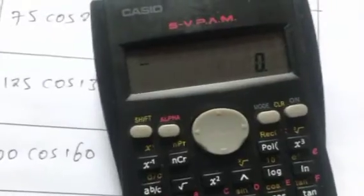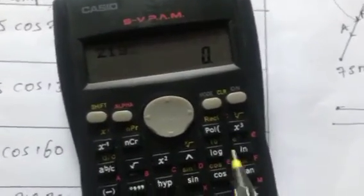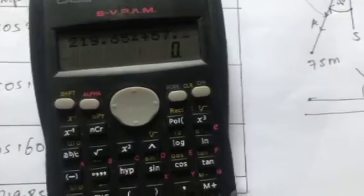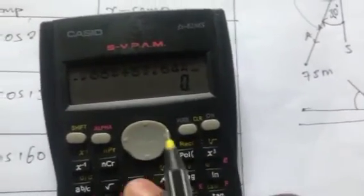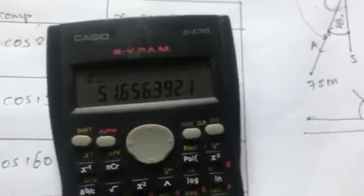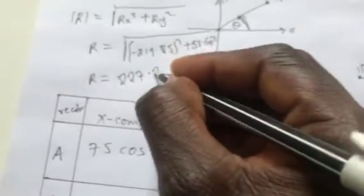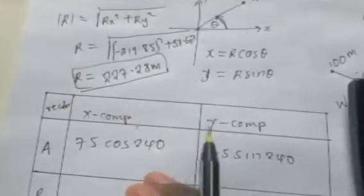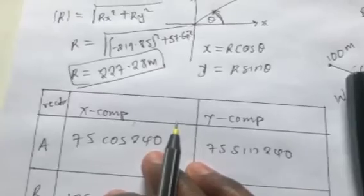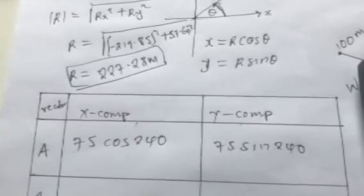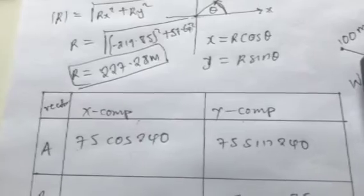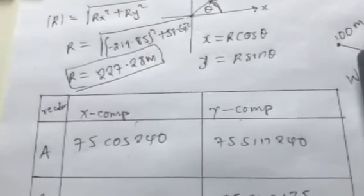Punching this into the calculator: √(219.85² + 57.64²) gives us 227.28 meters. The resultant displacement is 227.28 meters. Thank you for watching — take time to watch the second video since it is related to this one, and learn how to resolve vectors and find the magnitude and direction.